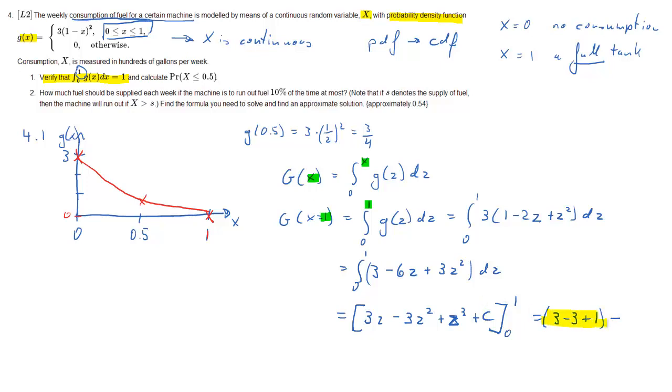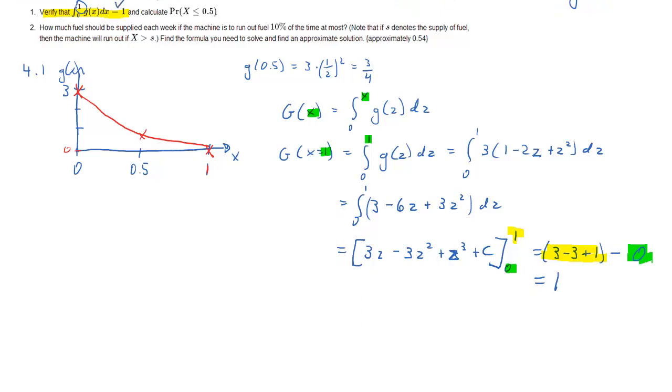So if we now plug in the 1 value first, we plug in 1 into that square bracket term, and then we subtract the square bracket term with 0. So when we plug in 1, we get 3 minus 3 plus 1. If we plug in 0, we get 0. So that's 1. And therefore, we have confirmed what we were being asked to show.